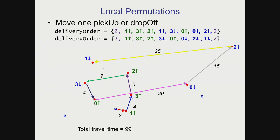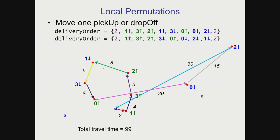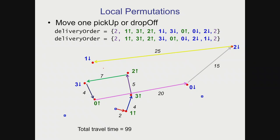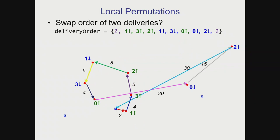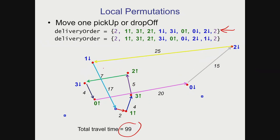I take drop-off one and move it to the end of the delivery order. Animated, instead of going from pickup two to drop-off one, I now go from pickup two to drop-off three, follow the rest of the path, then go to drop-off one, and back to the final depot. The new travel time is 99 minutes — worse than 93 — so I throw it away and revert to the older delivery order. That was one perturbation: moving one item in the delivery order to a different spot.